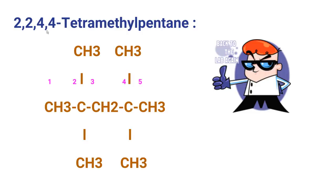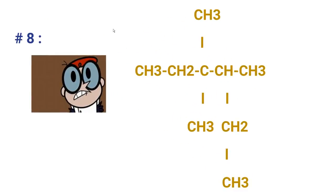The next compound — think about the name and write down your answer. The name of this compound is 2,2,4,4-tetramethylpentane, because the longest chain consists of five carbons making it pentane, and four methyl groups are located — two on the second carbon and two on the fourth carbon.